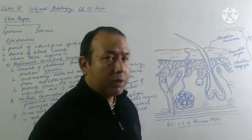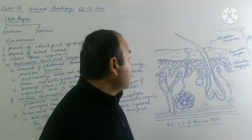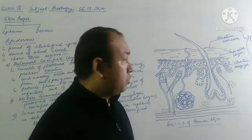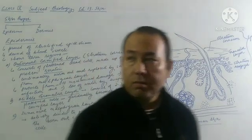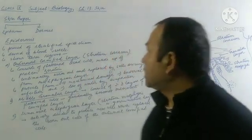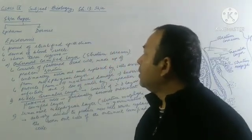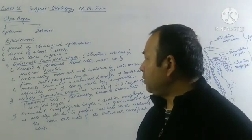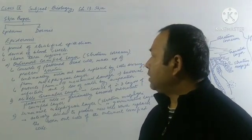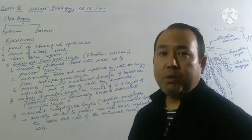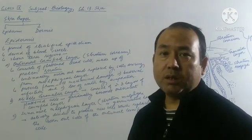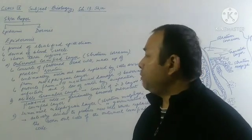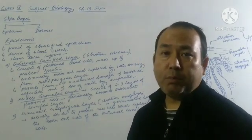You may be asked to label or draw the diagram, so practice is required. Let us go through the first part of the skin proper, that is the epidermis. 'Epi' means outer and 'dermis' means skin, so epidermis is the outer part of the skin, which is mainly formed by stratified epithelium.